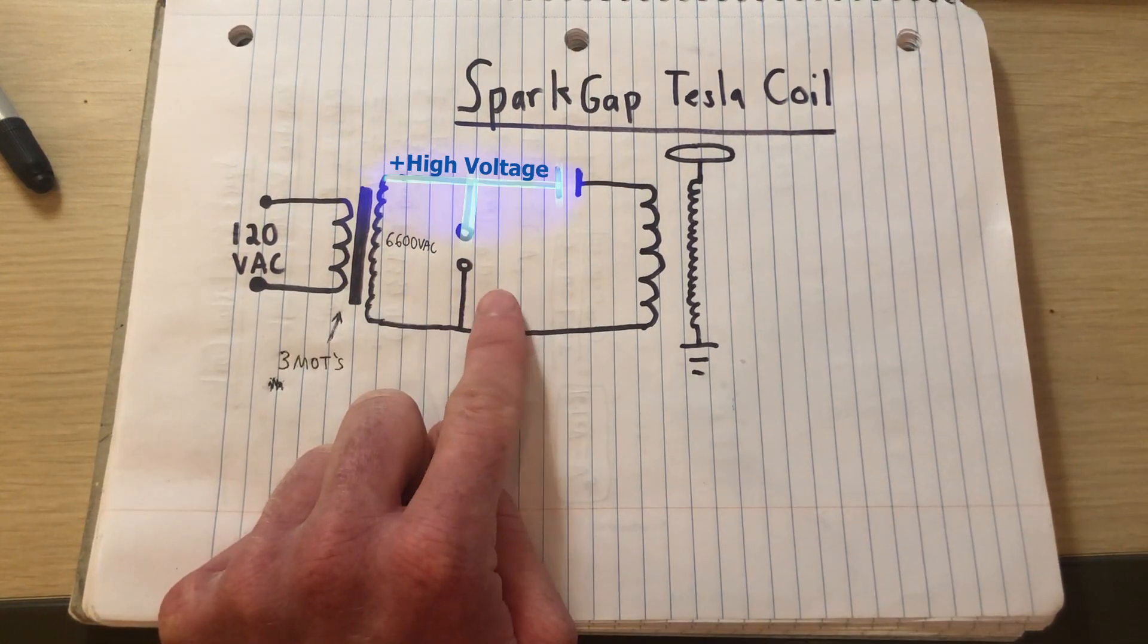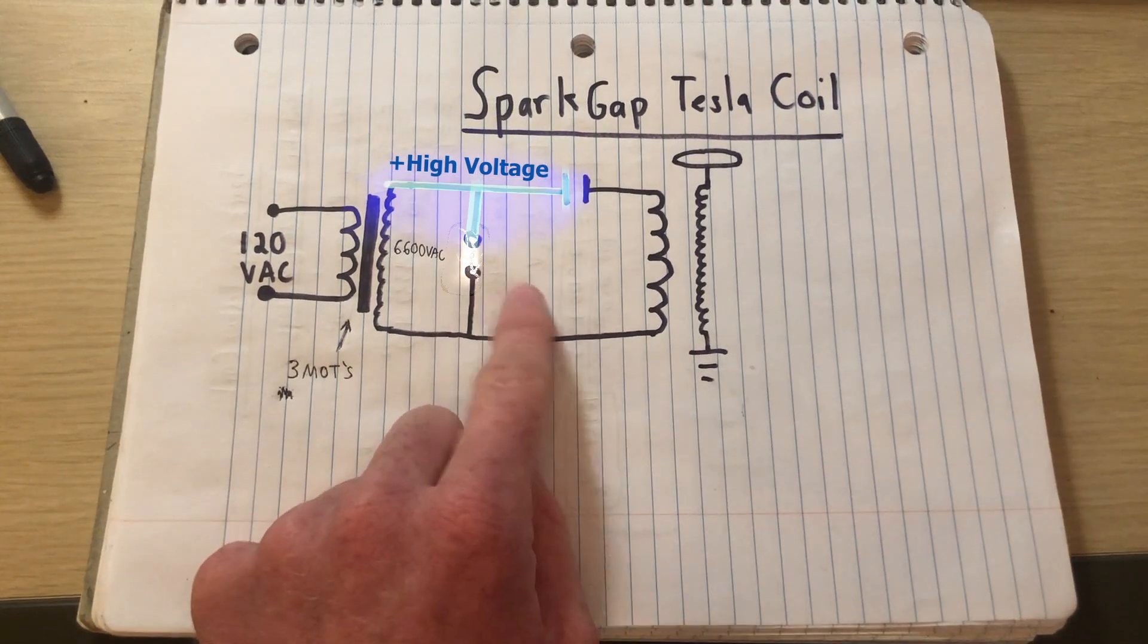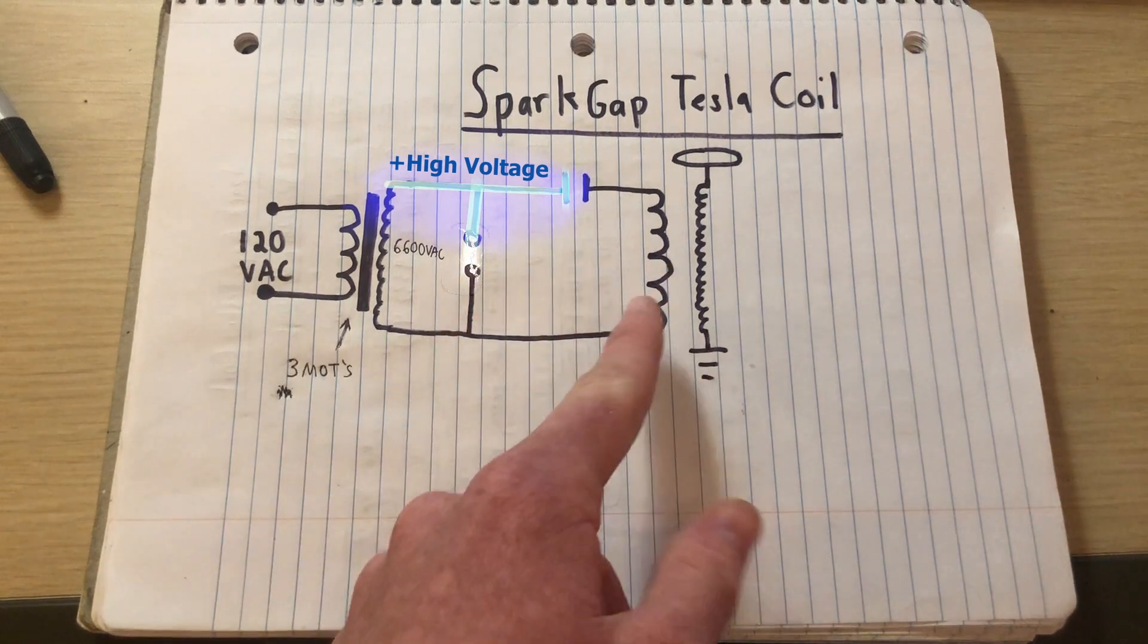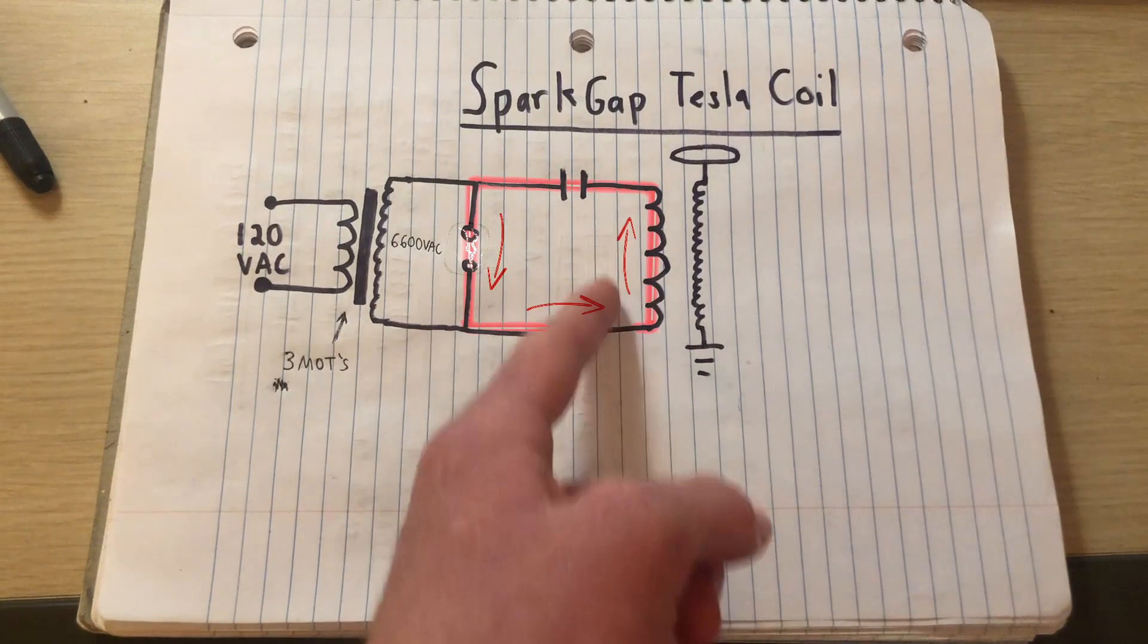And so once this breakdown voltage is reached, the air in the spark gap is ionized, and a highly conductive plasma channel forms in the spark gap, allowing current to flow from this capacitor through this primary coil, which is what we want.